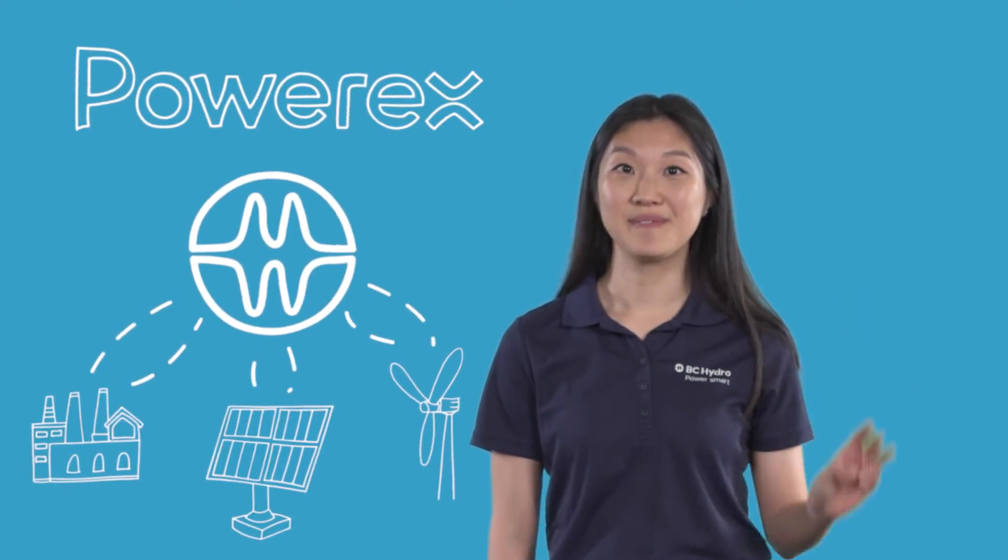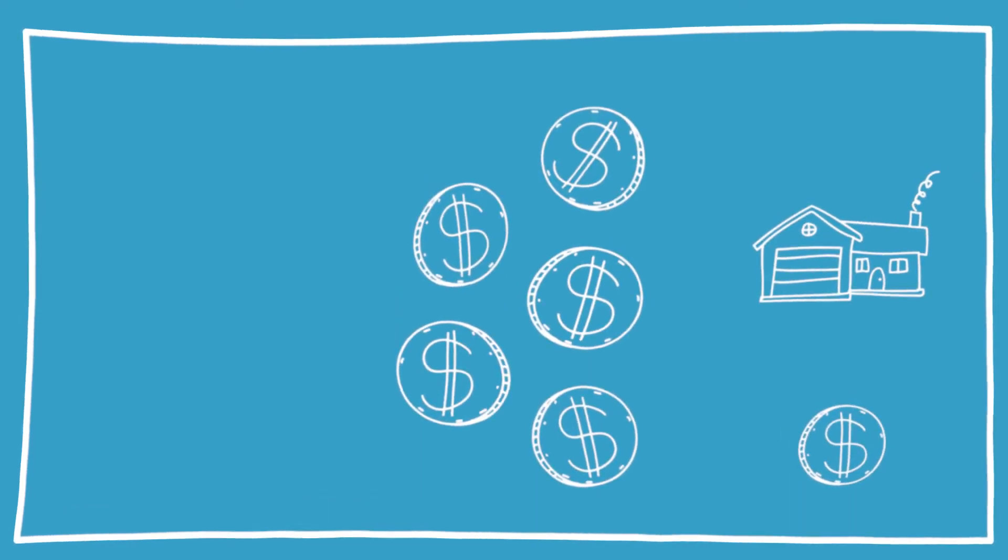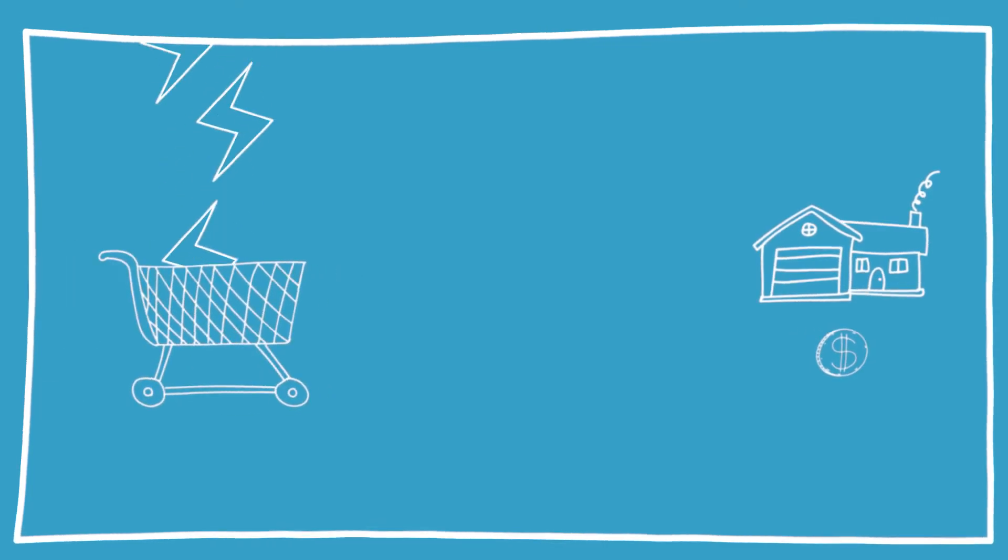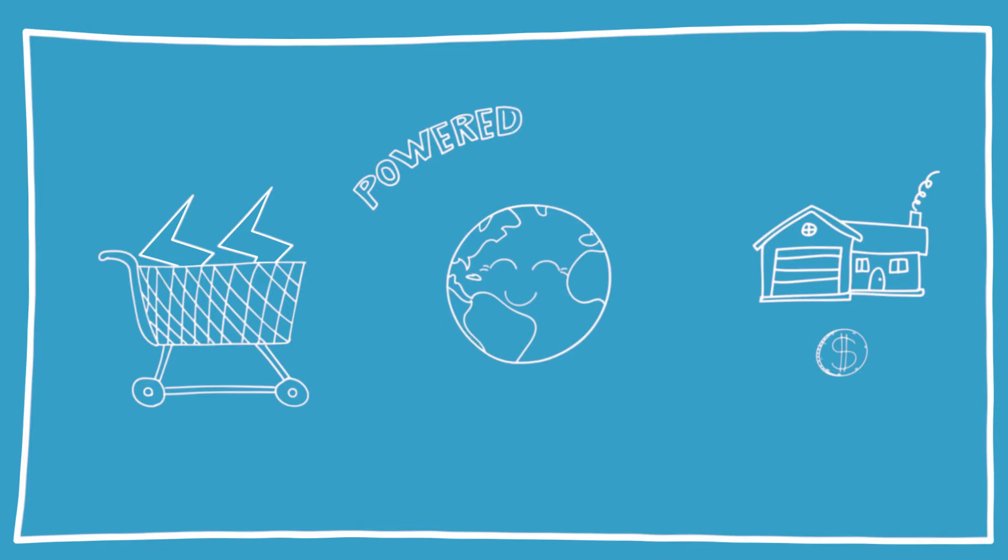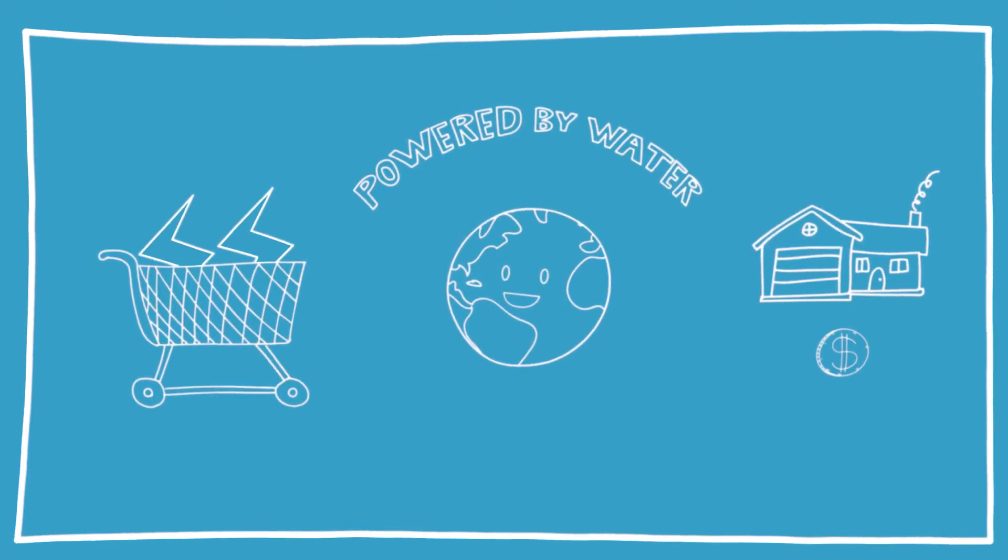This does three things. It brings in additional revenue to keep rates low for customers by selling power when prices are high and buying power when prices are low. It allows us to purchase energy when we need it, and it helps reduce greenhouse gas emissions by providing clean electricity to our trading partners who would otherwise be producing from dirtier alternatives like coal.